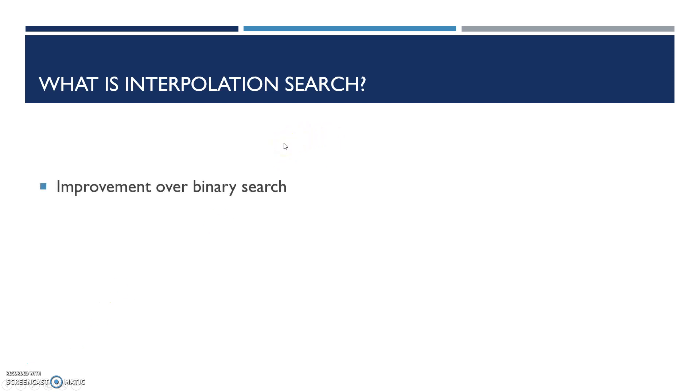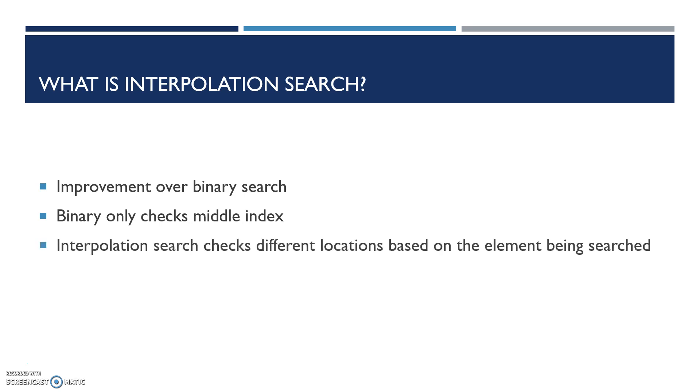It's an improvement over Binary Search. Binary Search only checks using the middle index of an array, whereas Interpolation Search checks different locations based on the current element being searched. It works more efficiently if the elements are sorted and uniformly distributed.